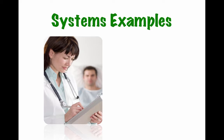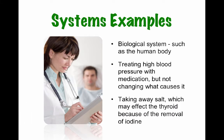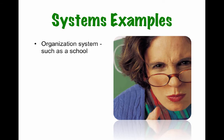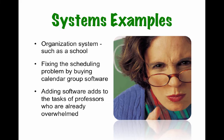Here's an example. In a biological system such as the human body, we might treat high blood pressure with medication, but if we don't change what causes it, it may not do any good. You might take away salt, which may affect the thyroid because of the removal of iodine. In another example that happened to me: in a university system, we had money to buy scheduling software thinking it would fix our problem with meetings, but adding the software added to the task of professors who were already overwhelmed — so we created more problems and didn't end up fixing any.